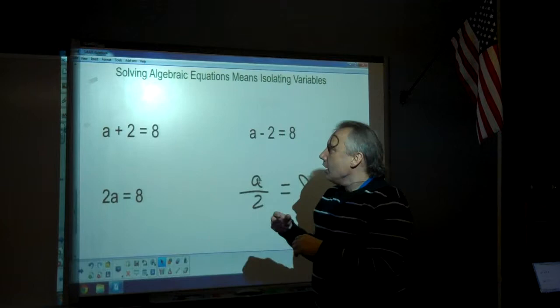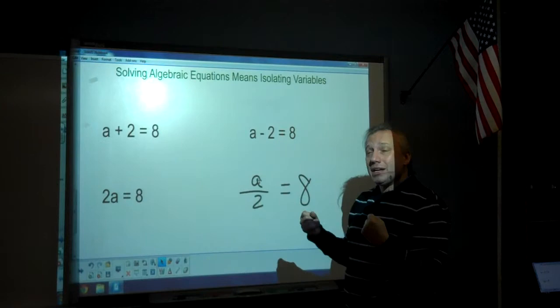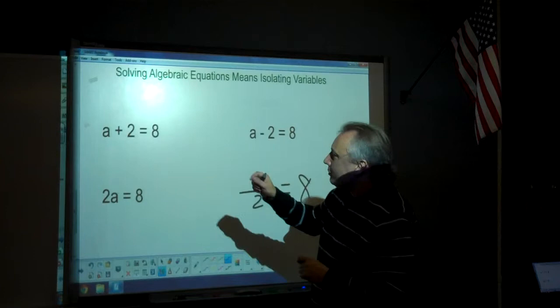See, the a plus 2 equals 8 equation. The a is not isolated because the 2, the plus 2 is on its side. The 8 has nothing to do with stopping the variable from being isolated because it's on the other side of the equation.